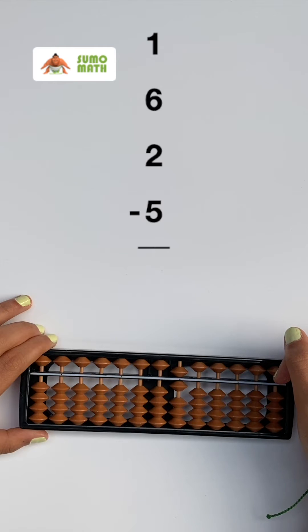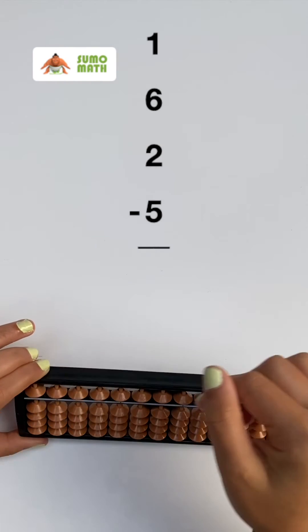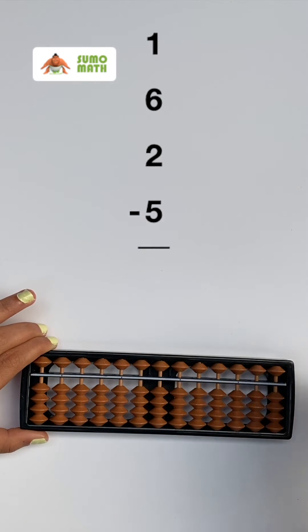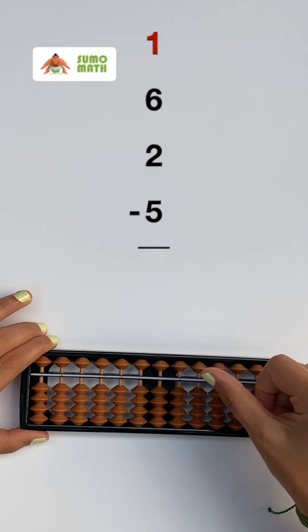Now, let's calculate. Add 6 to 1. So first, add 1 by moving one earthly bead to the reckoning bar.